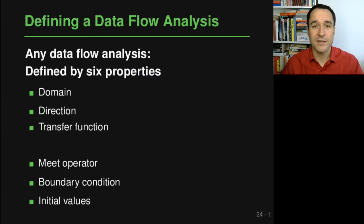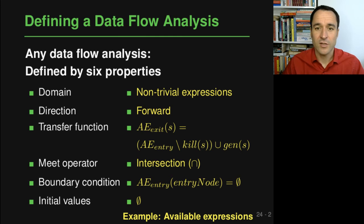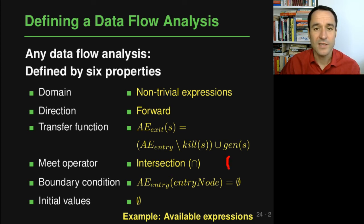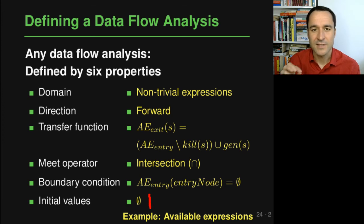To wrap up, here are the six properties for the available expressions analysis: the domain is the set of all non-trivial expressions; the direction is forward; the transfer function takes the entry state, removes everything killed, and adds everything generated; the meet operator is intersection; the boundary condition is the empty set at the start of the control flow graph; and the initial values for intermediate nodes are also the empty set.